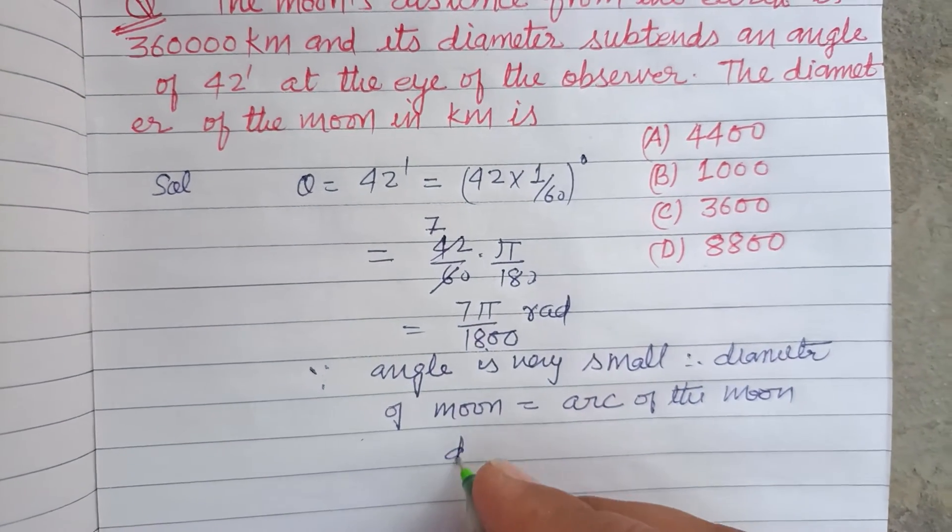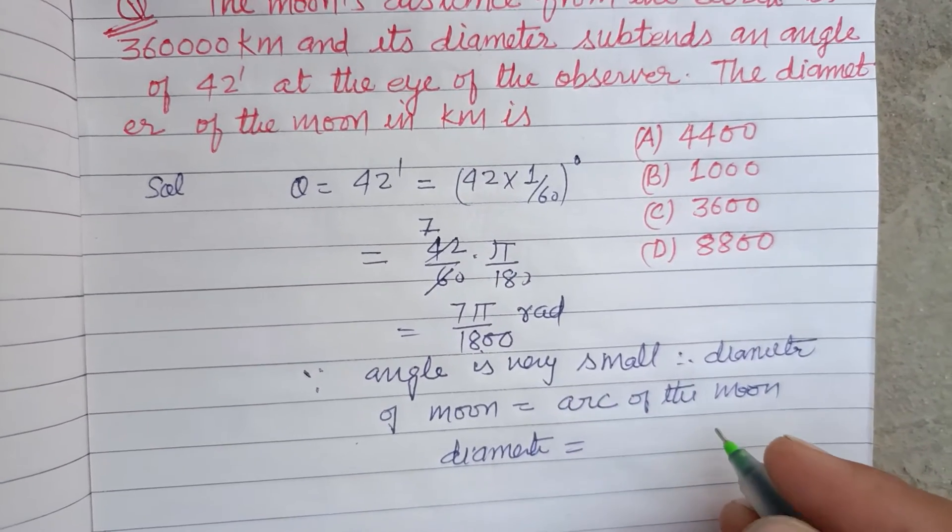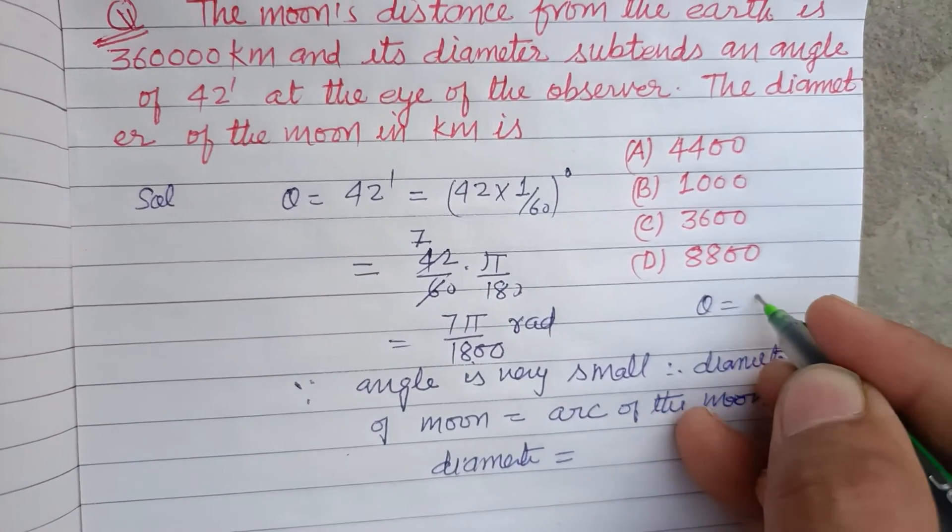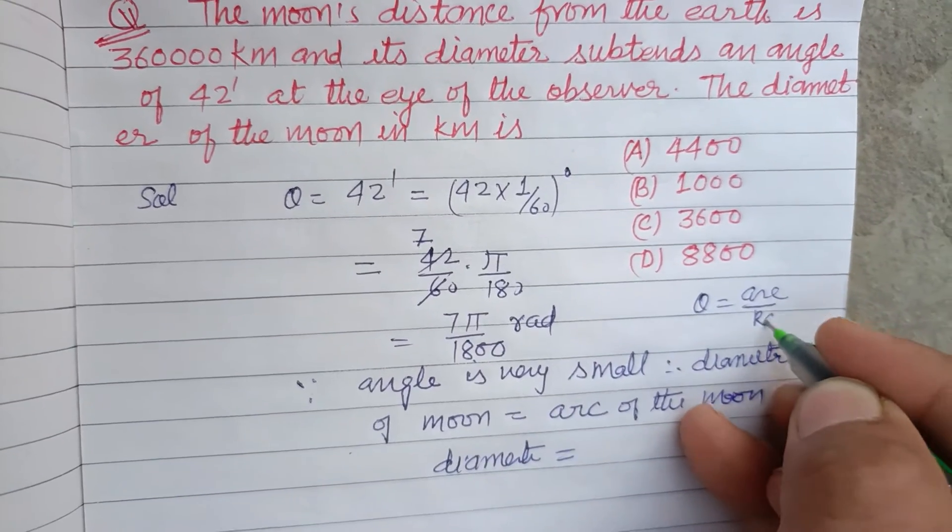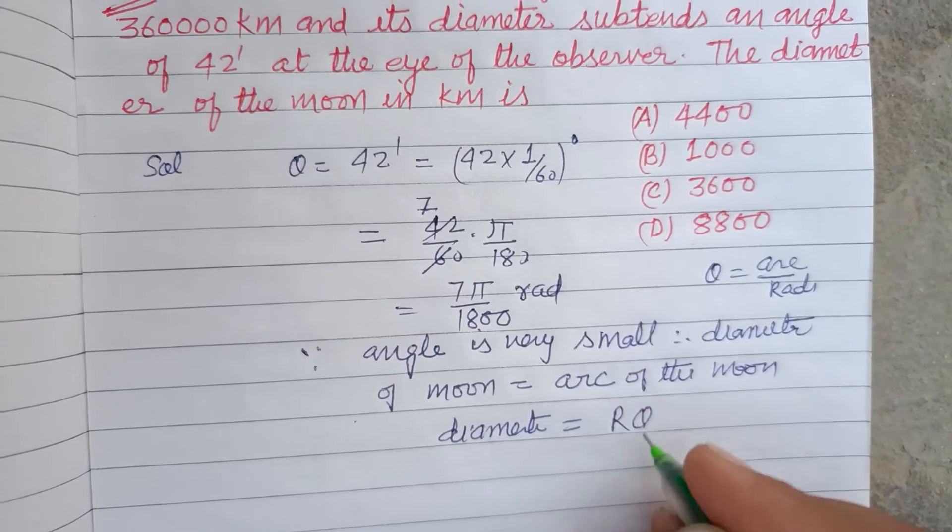So diameter equals arc. Angle equals arc over radius, so arc equals theta times r. R is the radius and theta is the angle.